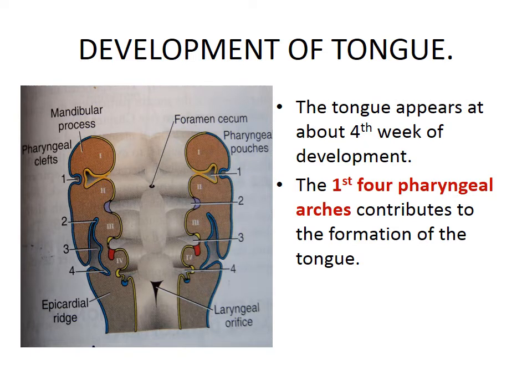Now coming to the development of the tongue. It is seen that at the fourth week of development, the tongue appears in the region of the pharyngeal gut. The first four pharyngeal arches — of the six total — will contribute to the formation of the tongue in an embryo.